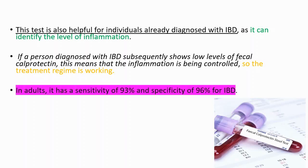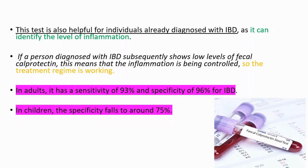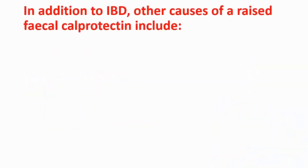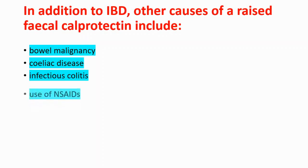In adults, it has a sensitivity of 93% and specificity of 96% for inflammatory bowel disease. In children, it's less specific. In addition to inflammatory bowel disease, there are other causes of a raised fecal calprotectin, for example bowel malignancy, celiac disease, infectious colitis, and use of non-steroidal anti-inflammatory drugs.